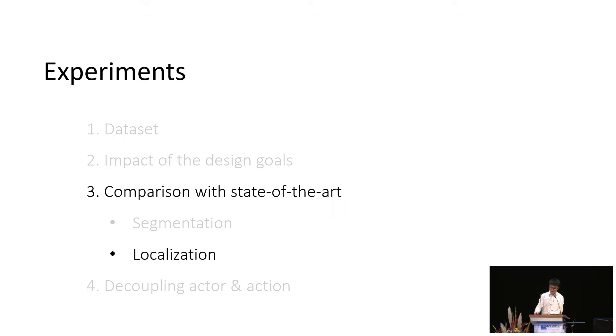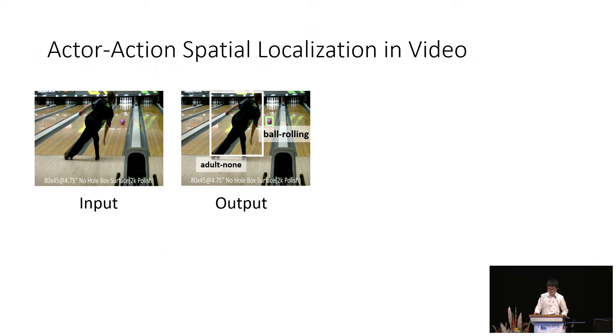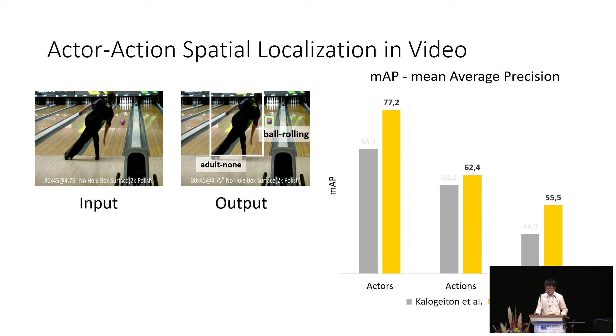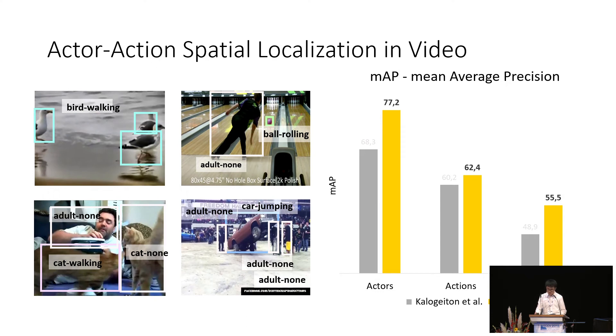Now we compare on another task of action spatial localization. As a reminder, in actor action spatial localization, the input is a video clip and the output is the bounding boxes, actor labels, and action labels of each instance in each frame, and we evaluate on the metric of mean average precision or MAP. And again, our model generates better localization results than prior work. Here are some examples of our localization outputs.